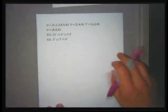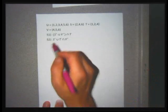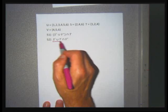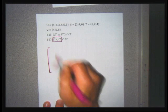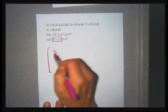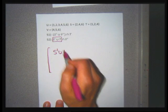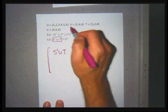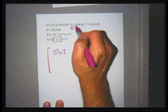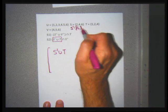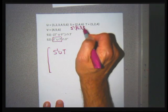Problem 52 has no parentheses, so I just work from left to right. The first thing I'll do is find S' union T. S' is {1, 3, 5}.